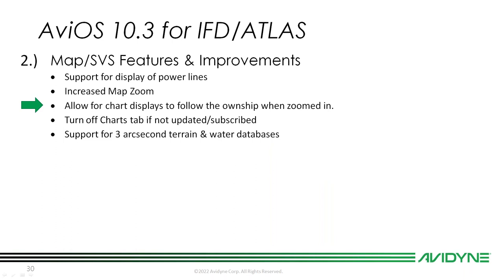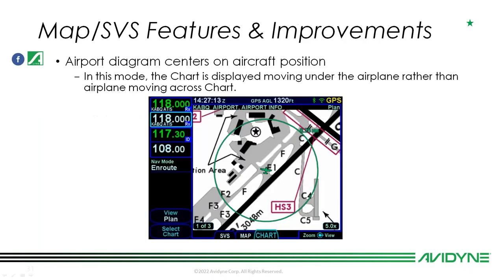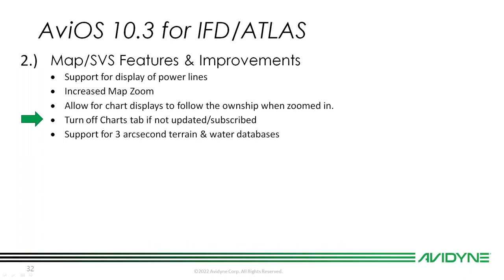We've allowed chart displays to follow the own-ship when zoomed in. Previously, the aircraft would move over the chart instead of the chart moving underneath a center-fixed aircraft icon. Now the chart is displayed moving underneath the plane icon — the chart moves and your aircraft stays fixed — so your plane no longer goes off screen.